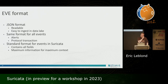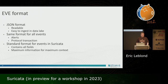The EVE format that we use is the nickname for the JSON file. It's really easy to read because it's JSON, and really easy to ingest into any data lake like Splunk, Elasticsearch, or other SIEMs. The good thing is that we have the same format for all events — for alerts and also for protocol transactions. It contains all the fields we can export, giving you the maximum information you can get from the engine.